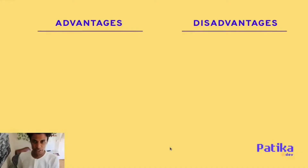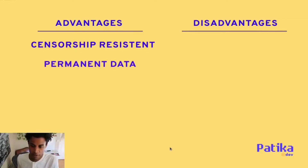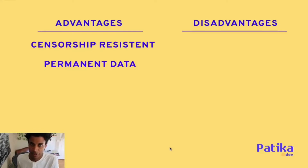Let's look at the advantages and disadvantages of working in this decentralized manner. One advantage is that it's censorship resistant — users can't be banned or removed from your application, and a service like AWS or Google cannot pull your application based on their requirements. The data you work with is also permanent: once data is committed to the blockchain, it's there forever. Even if you rebuild an application, that data remains accessible to anyone.